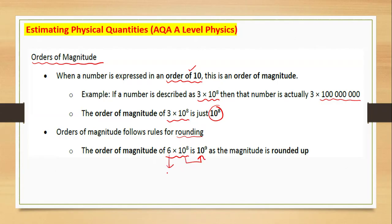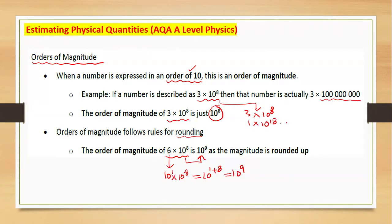Why does 6 × 10⁸ round to 10⁹? Because you can round 6 up to 10, which is 10¹, so 10¹ × 10⁸ = 10⁹. But for light, since its coefficient is 3 — which is closer to 1 — we write it as 1 × 10⁸, giving an order of magnitude of 10⁸.